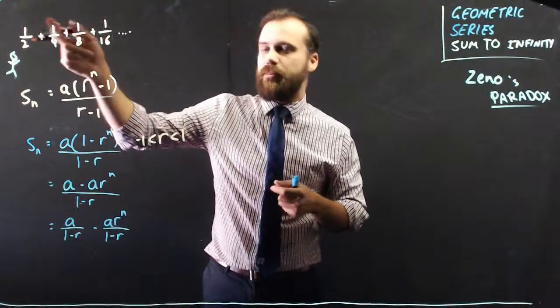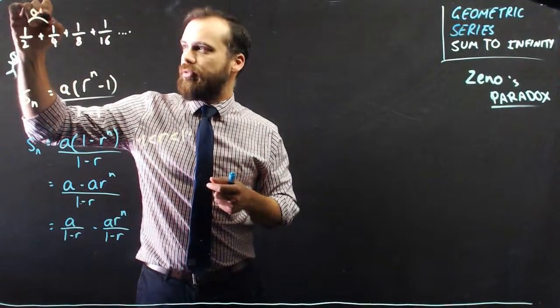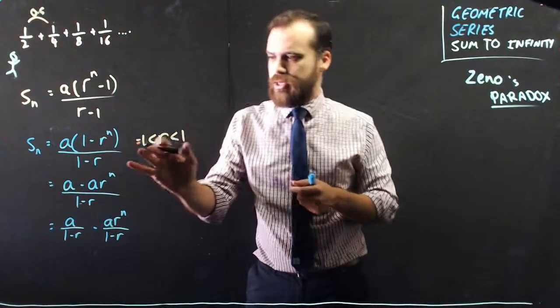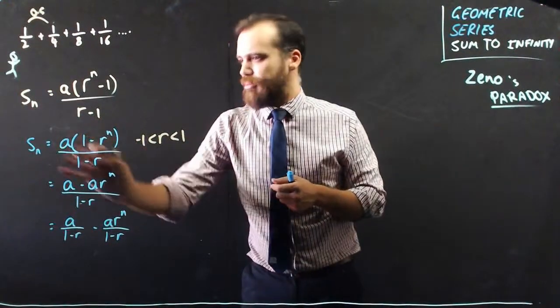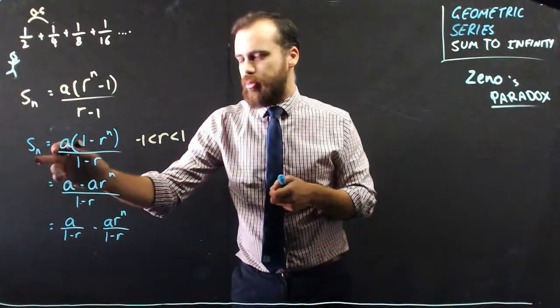Or we're multiplying it by 0.5 every time. So if r is between negative 1 and 1, this might be a more useful way to write our sum of a geometric series.